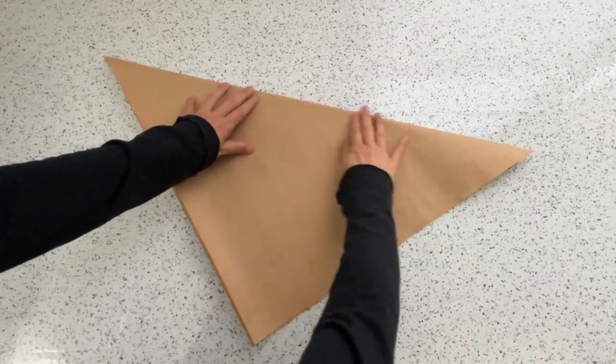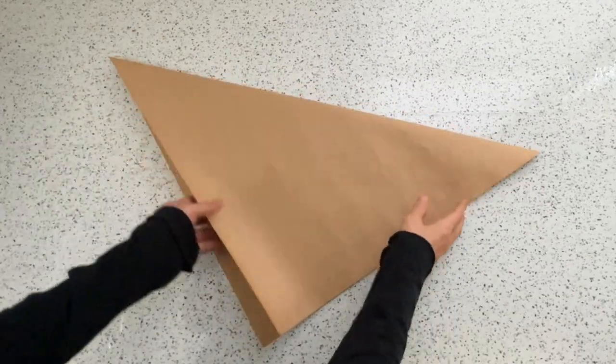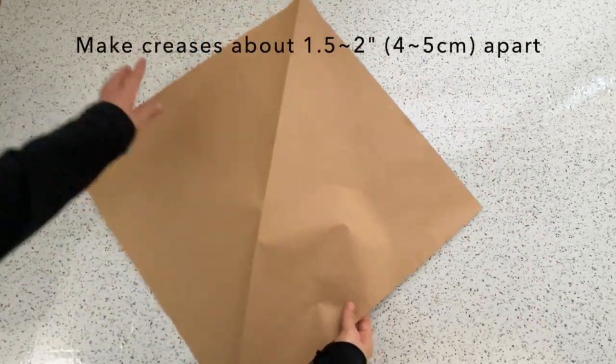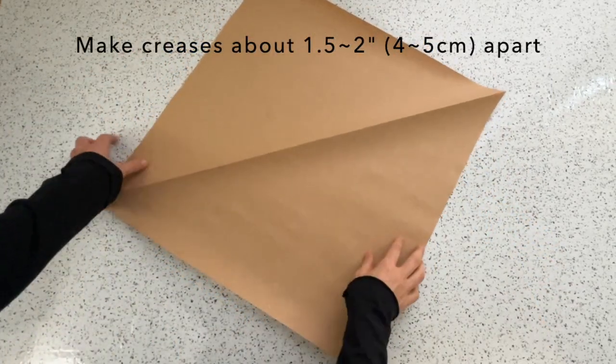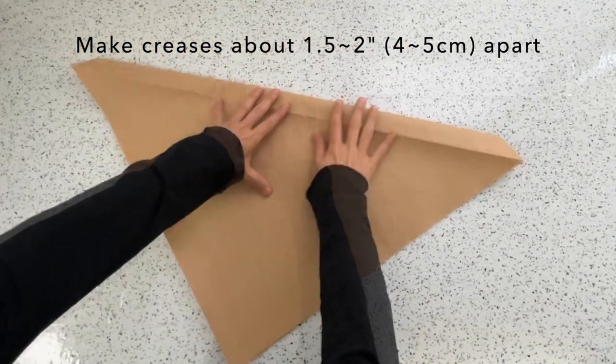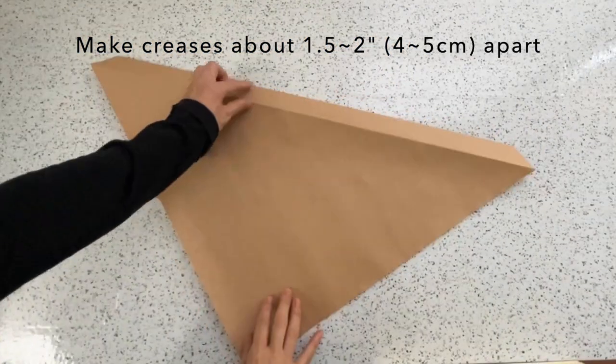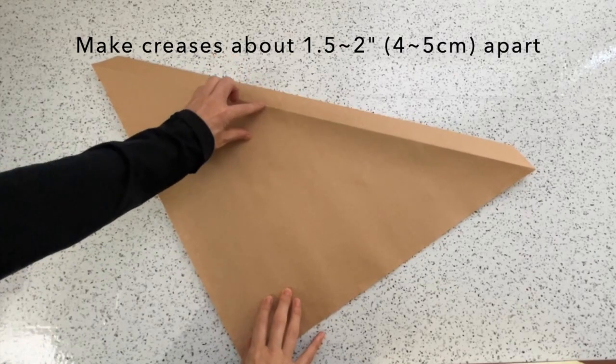Fold diagonally in the center. Make creases up and below from the center line. Make them apart from the center 1.5 to 2 inches or 4 to 5 cm.